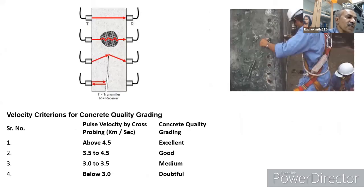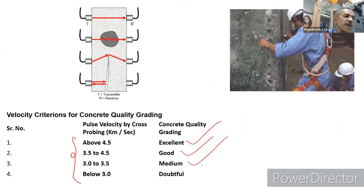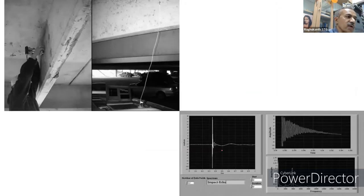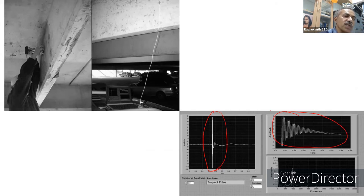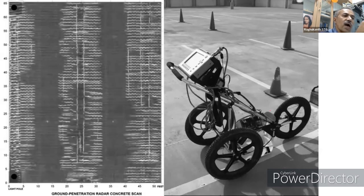From UPV testing you can estimate crack size and location in columns, beams, and other members. Impact echo testing records and amplifies the wave response — uncracked concrete gives one signal pattern, while cracks give a different response. Using Fourier transforms and analysis, you can determine crack depth and location.